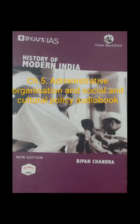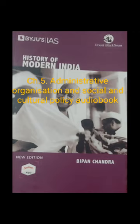A special feature of the Indian Civil Services since the days of Cornwallis was the almost complete exclusion of Indians from it. It was laid down officially in 1793 that all higher posts in administration worth more than Rs. 500 per year in salary were to be held by Englishmen. This policy was also applied to other branches of government such as the army, police, and judiciary. In the words of John Shore, who succeeded Cornwallis: 'The fundamental principle of the English has been to make the whole Indian nation subservient in every possible way to the interests and benefits of ourselves. The Indians have been excluded from every honor, dignity, or office which the lowest Englishman could be prevailed to accept.'